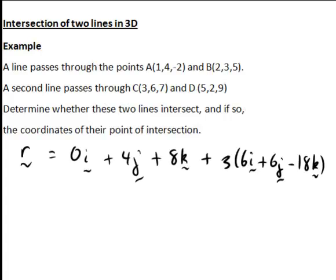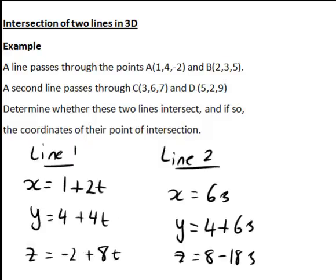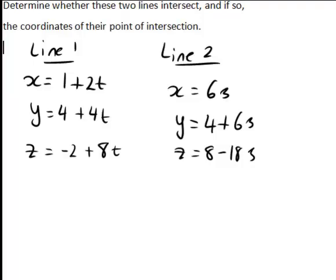We now want the scalar parametric equations of this second line. Since R is xi plus yj plus zk, x is the coefficient of the i components on the right-hand side, giving x equals 6s. Y is the coefficient of the j terms, giving y equals 4 plus 6s. And z is the coefficient of the k terms, giving z equals 8 minus 18s. In summary, these are the scalar parametric equations of the two lines, and we're interested to see whether these lines intersect.